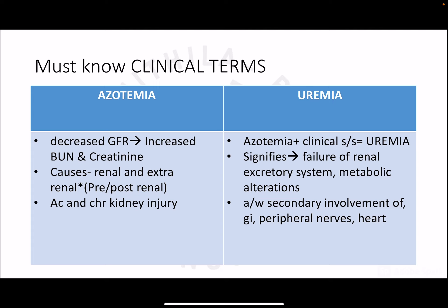There are certain clinical syndromes and terms we should know before studying the different diseases of the kidney. The first term is azotemia — a biochemical disturbance characterized by increased blood urea nitrogen and creatinine due to a decreased glomerular filtration rate. GFR is an important test to assess kidney function, and when GFR is decreased, blood urea nitrogen and serum creatinine are elevated. Azotemia can be seen in various acute and chronic kidney diseases.